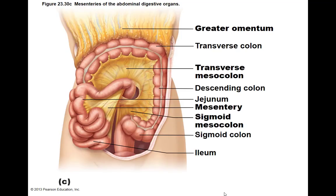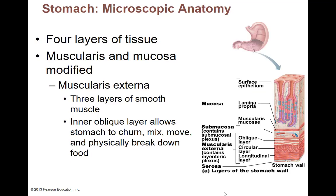There's another picture just of the greater omentum, peeled back so we can see everything. The stomach still has the four basic layers that everything in the digestive system has, and then depending on where you are in the digestive system, it can be slightly modified. In the stomach, the muscularis layer is a little bit different, and the mucosa layer is a little bit different.